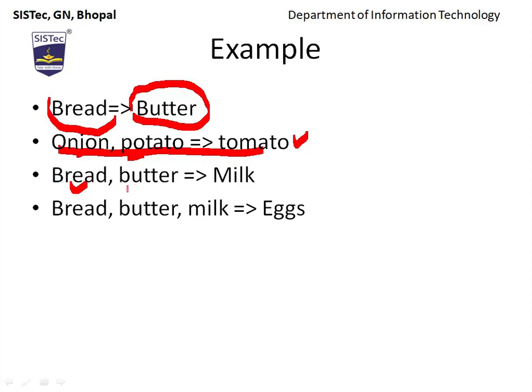If someone is buying bread, they might also take milk — this is another association. Another relation: if someone has taken bread and butter, they may also take milk. These are a few examples of how association rules can work.